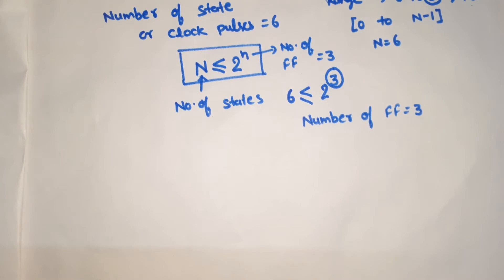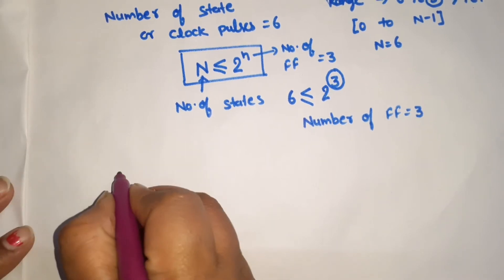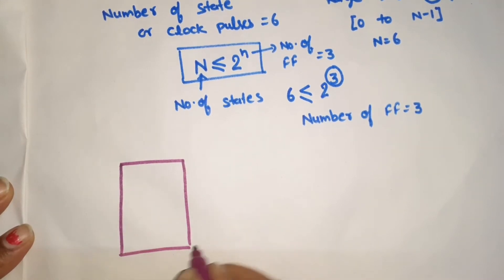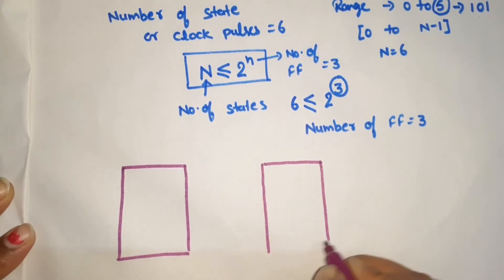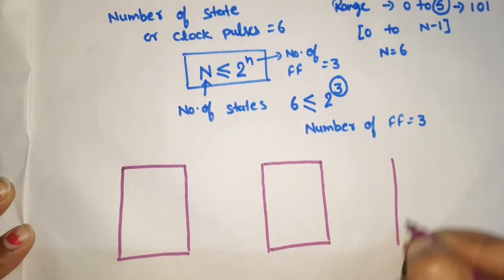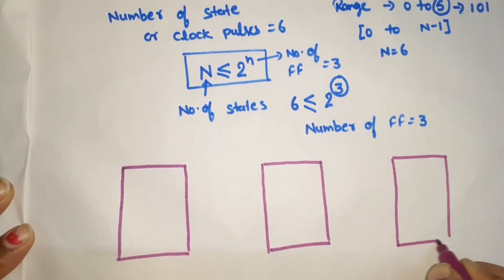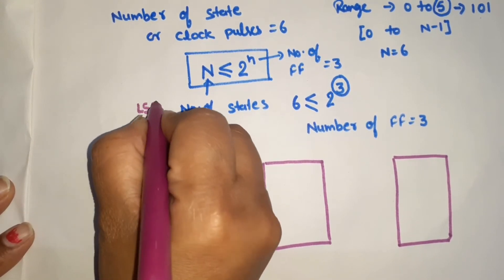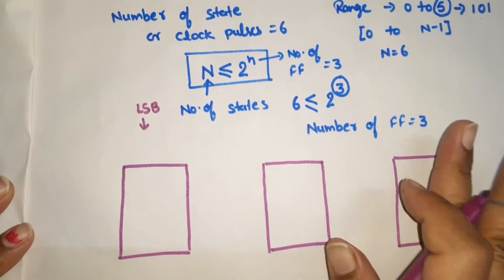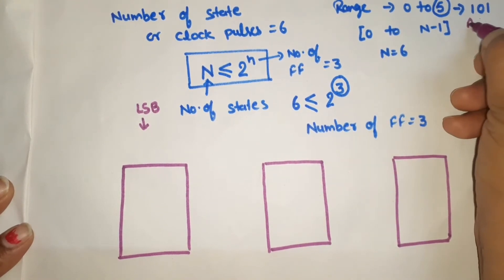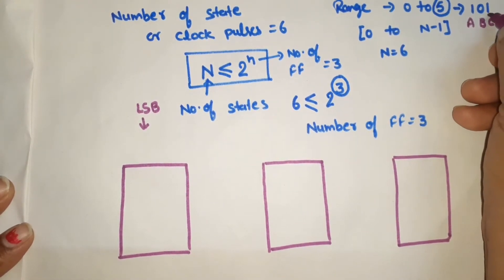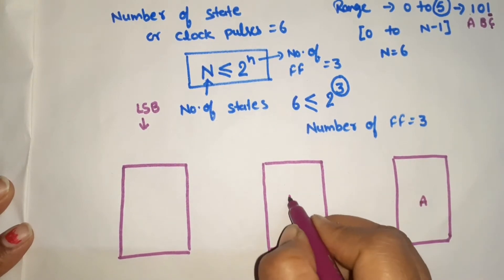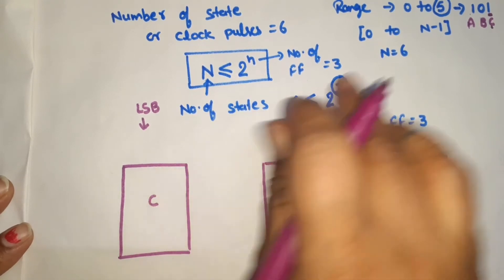Now we design the Mod 6 ripple counter. We need 3 flip-flops: first, second, and third. Remember, the first flip-flop represents the LSB bit and the last represents the MSB bit. If we label them A, B, C — then C is the LSB and A is the MSB. So the first flip-flop is A, second is B, and third is C.